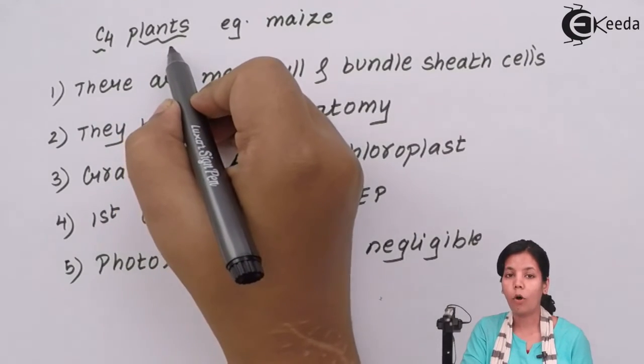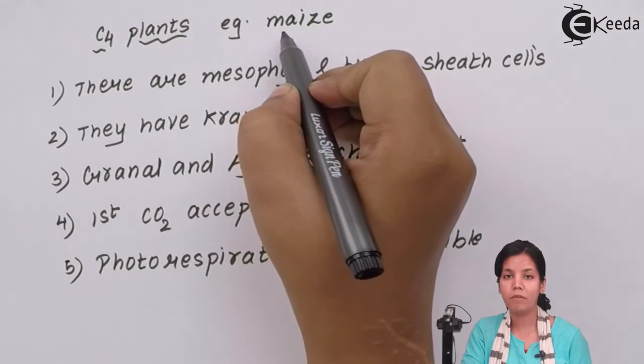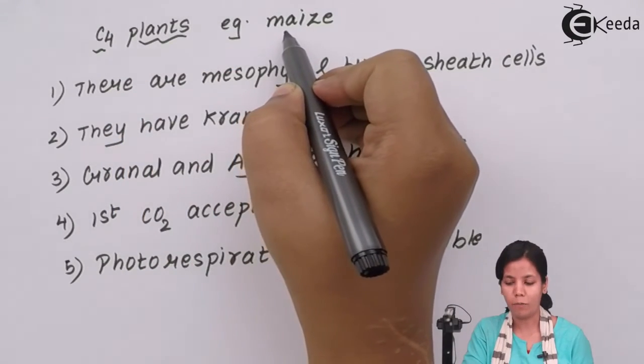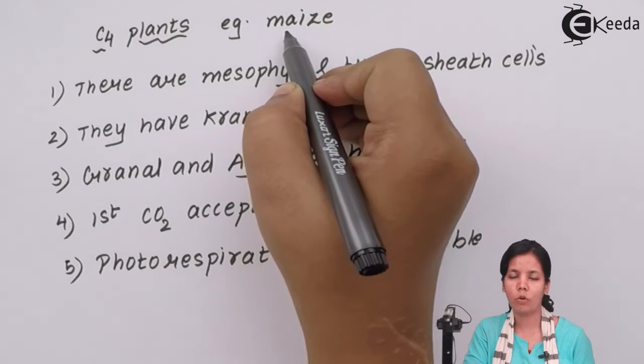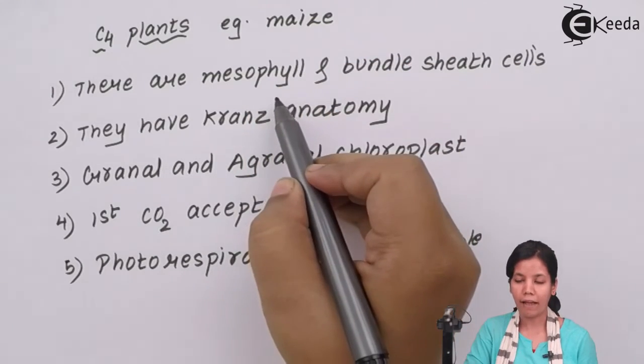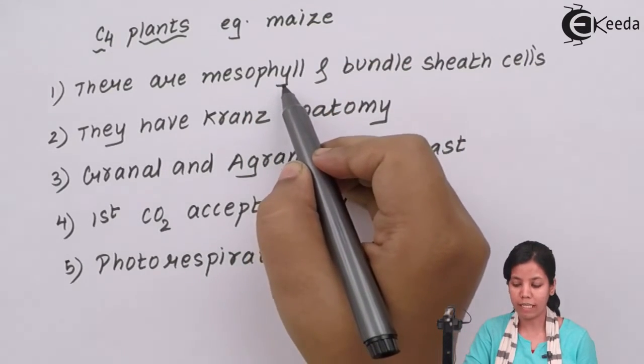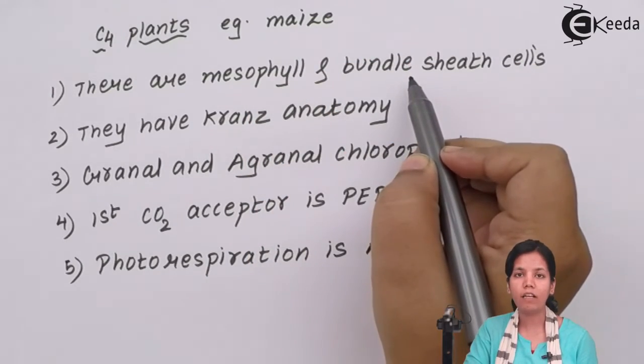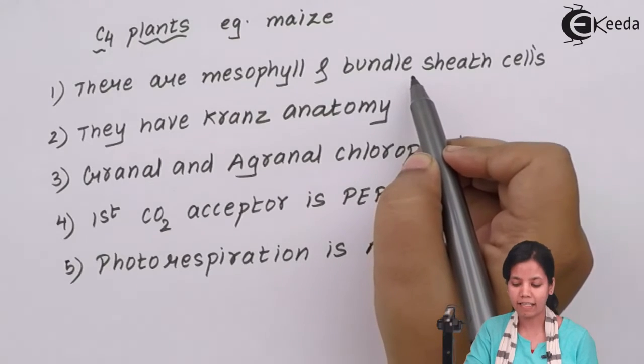C4 plants or maize plants - now these maize plants require higher amount of sunlight. They do not require much water to grow and they grow at higher temperate environments. Now C4 plants have a lot of mesophyll cells and bundle sheath cells, layers of bundle sheath cells in Kranz anatomy.